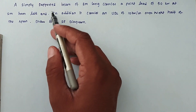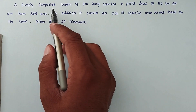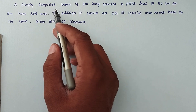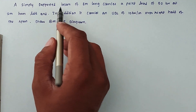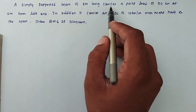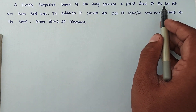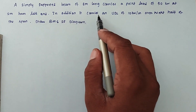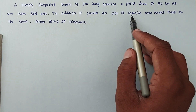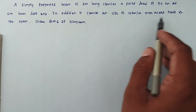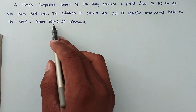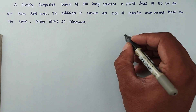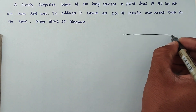Hello friends, welcome to civil engineering exam. Today we are going to see the problem related with bending moment and shear force calculation. The question is: a simply supported beam of 8 meters long carries a point load of 50 kN at 2 meters from the left end. In addition, it carries a UDL of 10 kN per meter over the right half of the span. Draw the bending moment and shear force diagram.